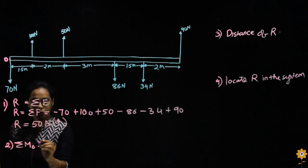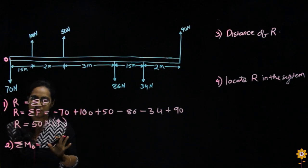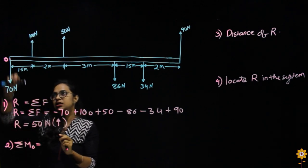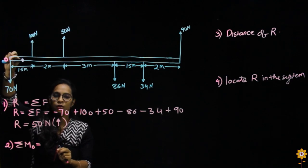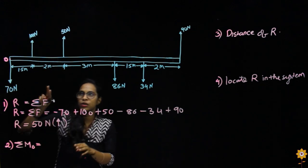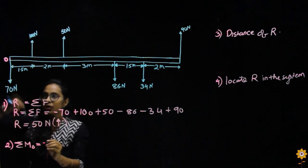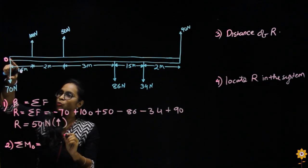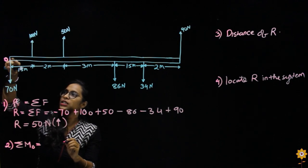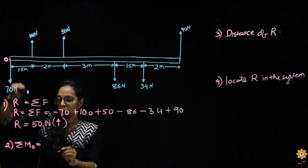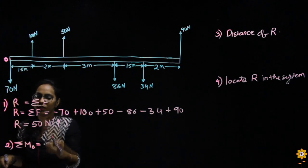The next step is to find the moment of all the forces in the system. We have considered our base point to be O, and from O we will find the moments of all the available forces. From point O, the first force is 70 Newton — but moment is force into perpendicular distance, and the perpendicular distance here is zero. So for 70 Newton there is no moment; it becomes zero.